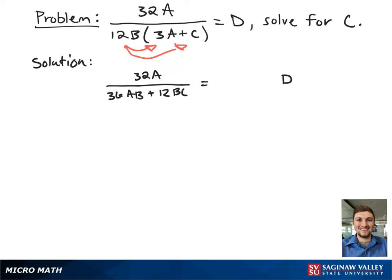First we're going to multiply out 12B in our denominator, and then after rewriting our new formula we're going to multiply both sides of the formula by 36AB plus 12BC.